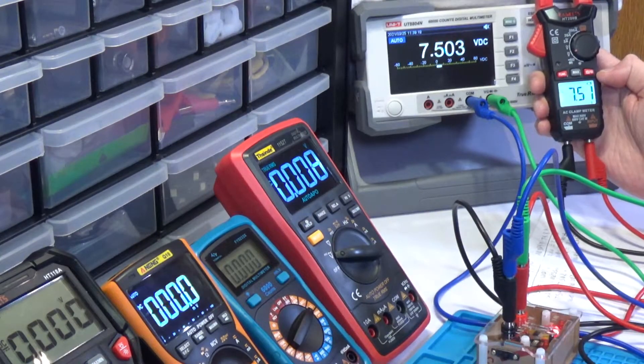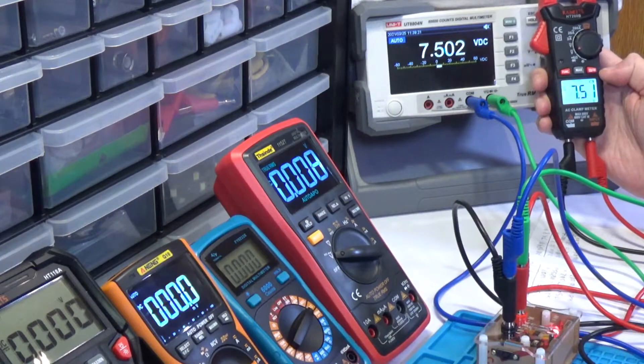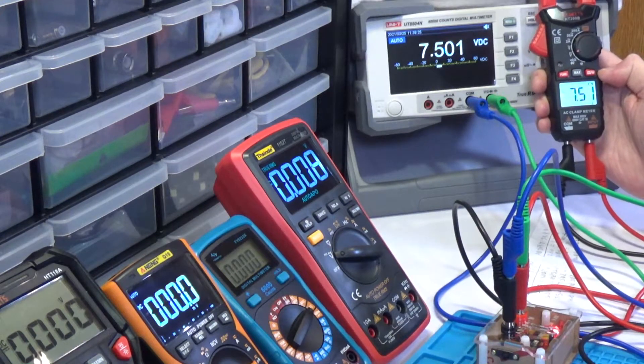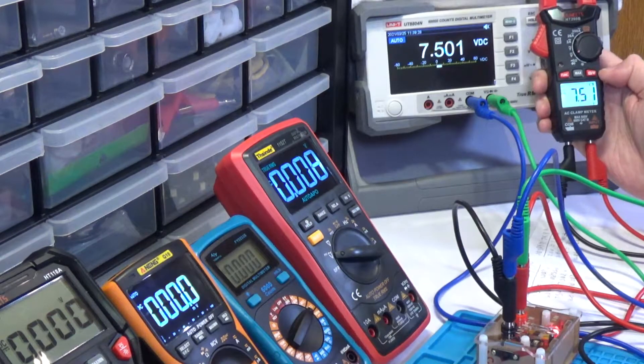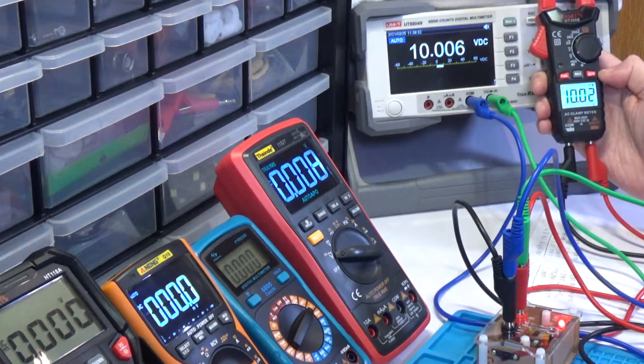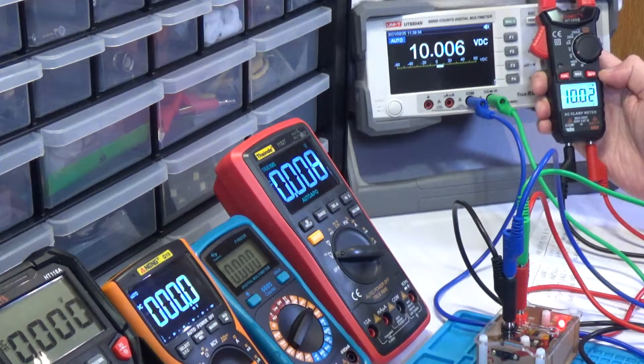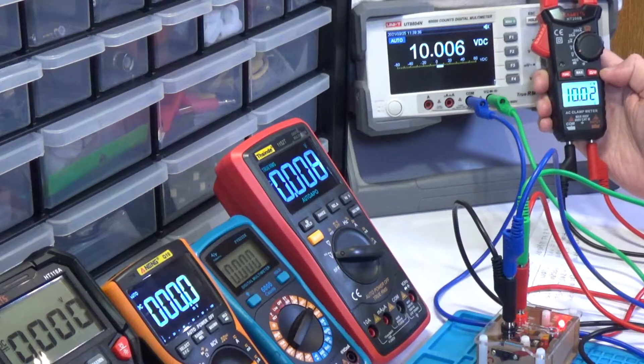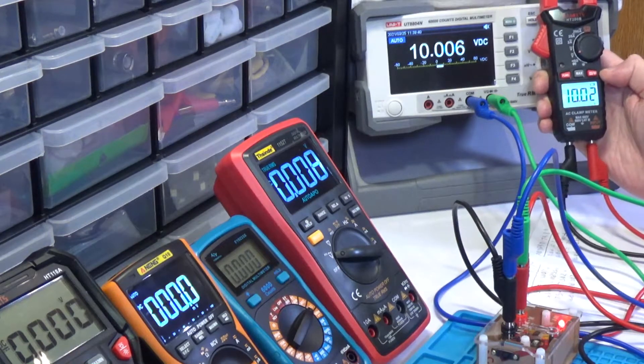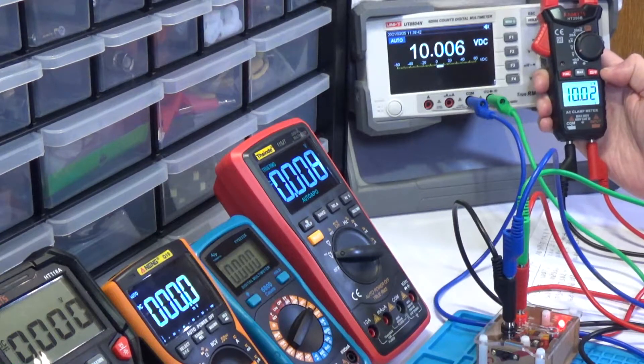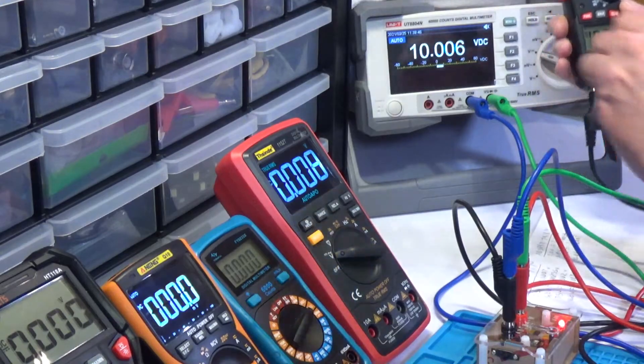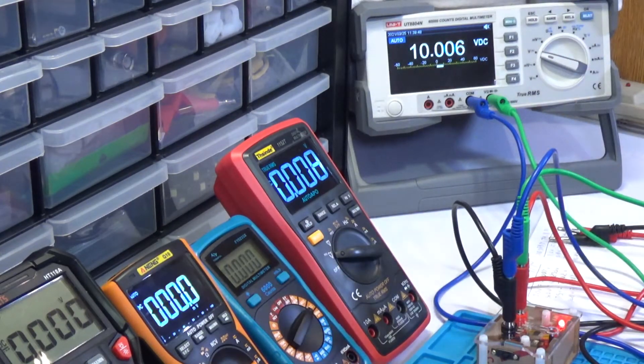On 7.5 we are getting 7.51. And as you can see it's a tad bit high on this. And on the 10 volts it is also reading a little bit high at 10.02. But still, for a 2,000 count clamp multimeter that costs 19 bucks, it's pretty darn close. All right, so we'll go to the next one here.